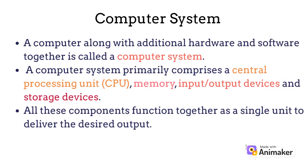A computer along with additional hardware and software together is called a computer system. A computer system primarily comprises a central processing unit (CPU), memory, input and output devices, and finally storage devices. All these components function together as a single unit to deliver the desired output.